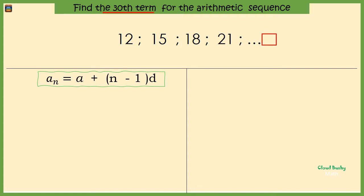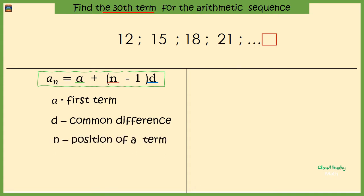So we want to substitute into this formula a, n, and d, where a is the first term of the sequence and d is the common difference. n is the position of the term in the sequence.